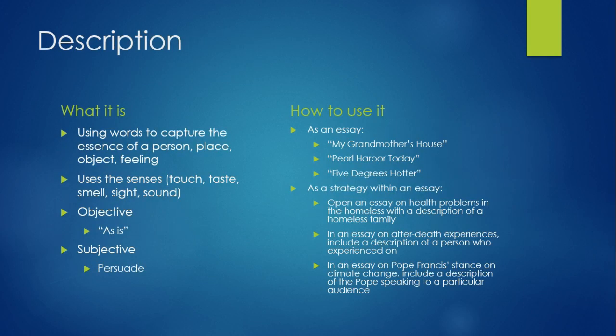The first one is description. Description is the bread and butter of the writer. If you can't describe something meticulously, carefully, and accurately, then you need to go back to square one in your writing. Learn how to describe. And to learn how to describe, you need to learn how to slow down, pay attention, look, listen, feel, taste, and touch.